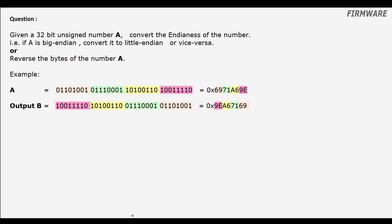Hey guys, just a brief background: the phone in your hand or the Wi-Fi device in your home could be using a processor which follows a little-endian system, but the internet protocol to which your device is connected commonly follows big-endian system. So we often see a requirement of converting the data format from big-endian to little-endian or vice versa, and that is the motivation for solving this question today.